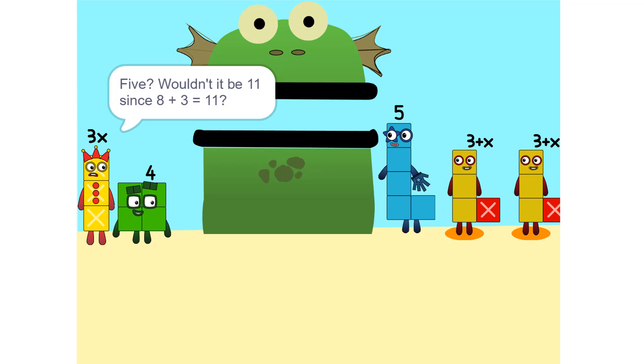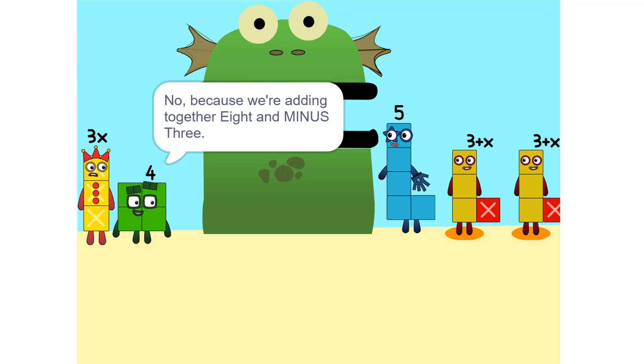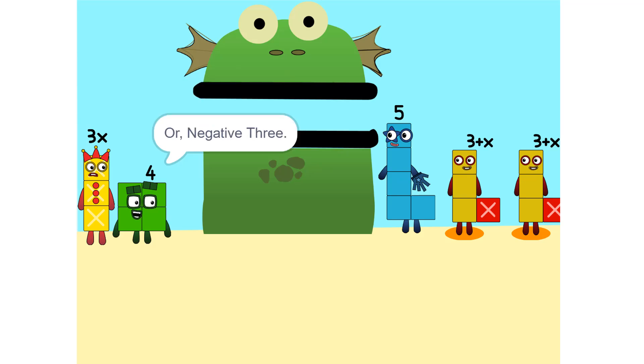We can also add these together. Five. Wouldn't it be 11 since 8 plus 3 is 11? No, because we're adding together 8 and minus 3, or negative 3. So it's 5.